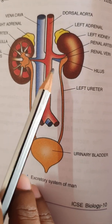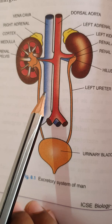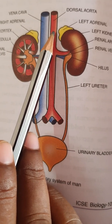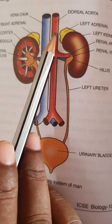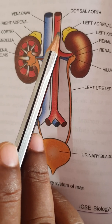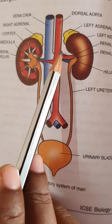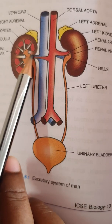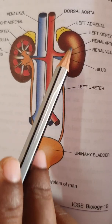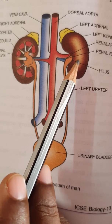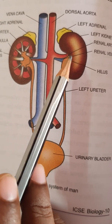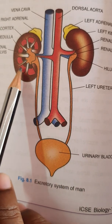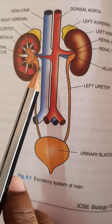The aorta divides into the renal artery, which divides into two branches — each branch enters one kidney. Inside the kidneys, these vessels keep dividing and supply blood to the kidney for purification.